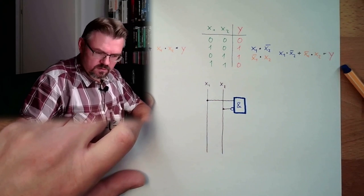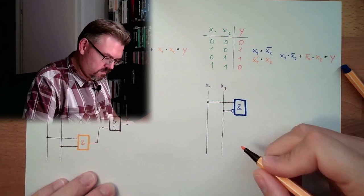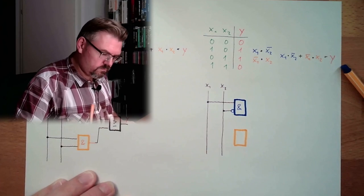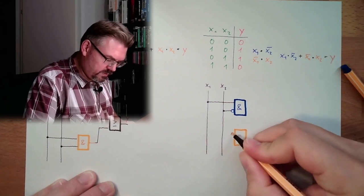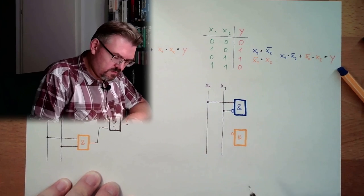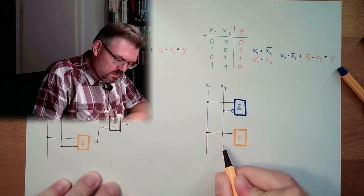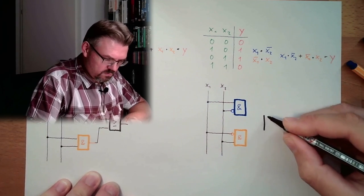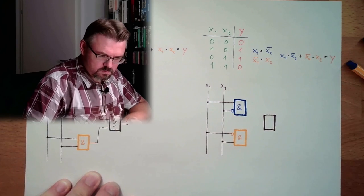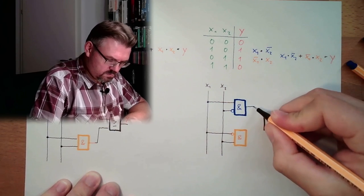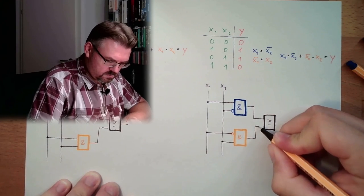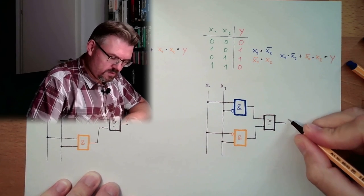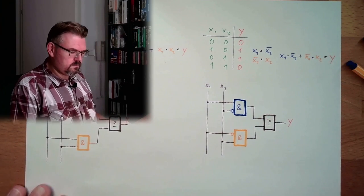The second one is also an AND. This time the first one is inverted. x1 is inverted. x2 is not inverted. And then we are combining this with an OR. And the result is y.